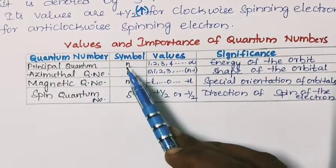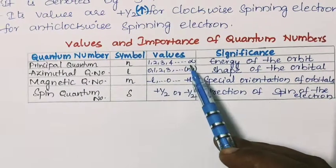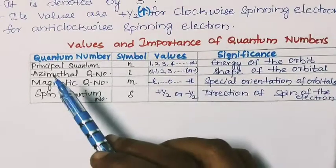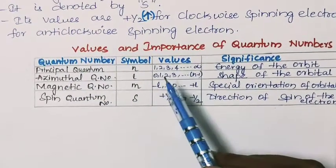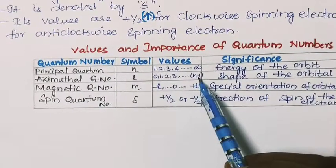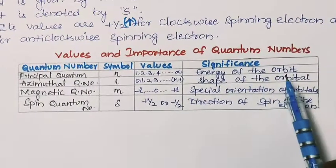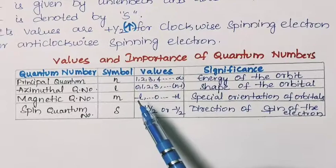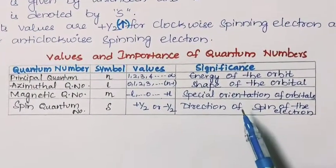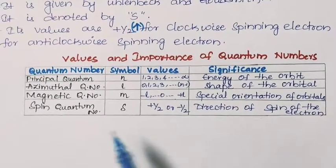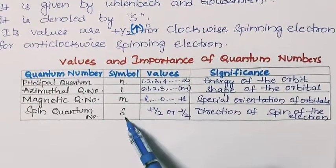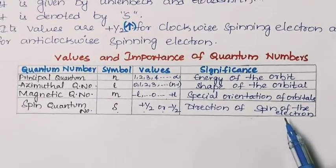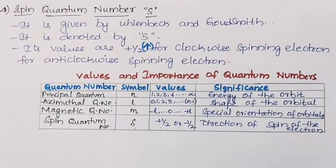The principal quantum number (n) has values from 1 to infinity and gives the energy of the orbit. The azimuthal quantum number (l) has values from 0 to n − 1 and gives the shape of the orbital. The magnetic quantum number (m) has values from −l to +l and gives the spatial orientation of the orbitals. The spin quantum number (s) has values of +½ or −½ and gives the direction of spin of the electrons. This is all about the quantum numbers. Thank you, children.